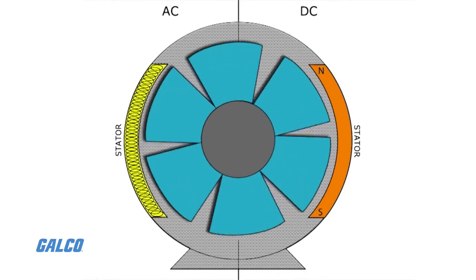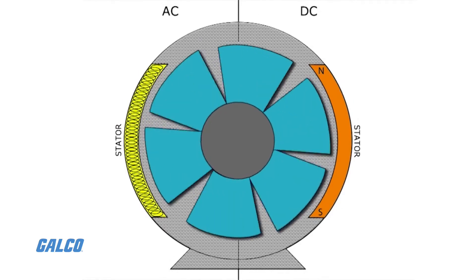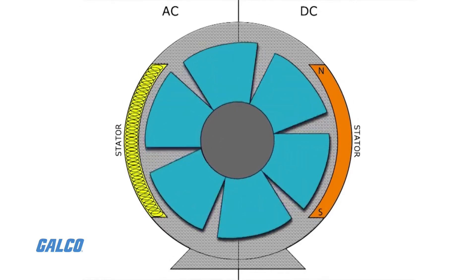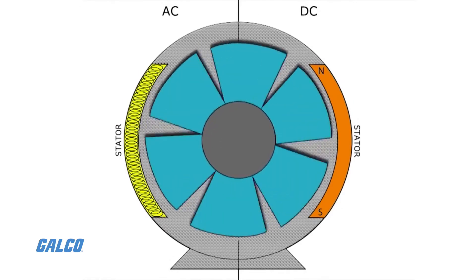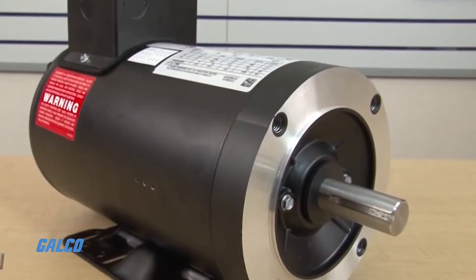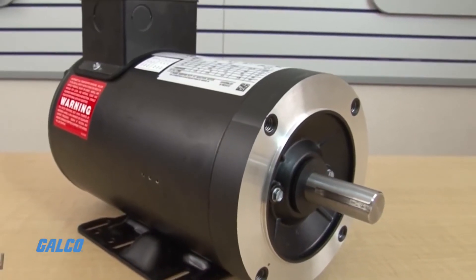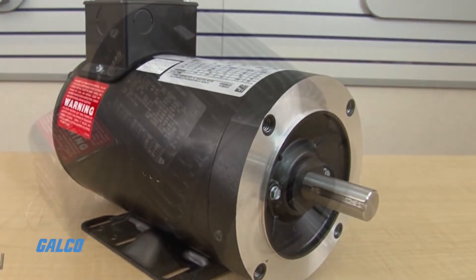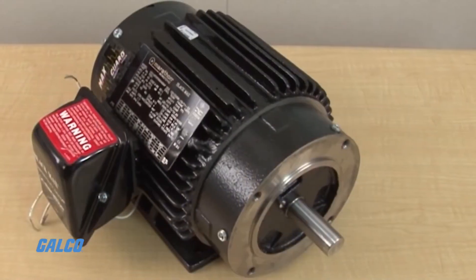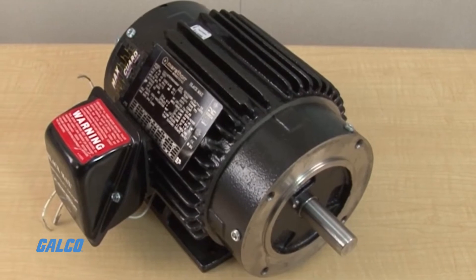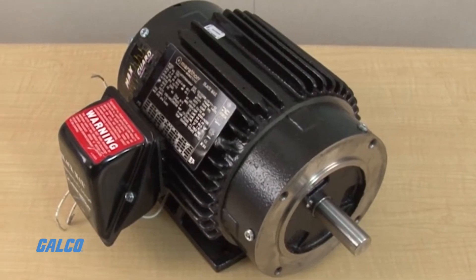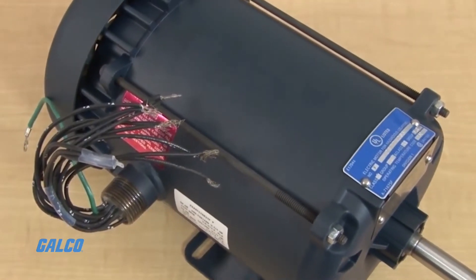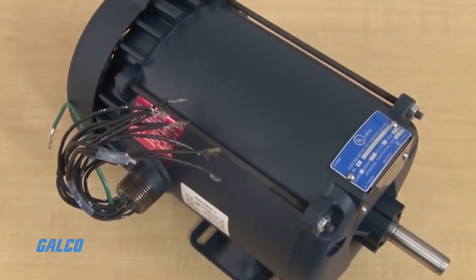The interaction between these rotating fields induces the rotation of the motor. AC motors are less efficient than DC motors because they have to create their own magnetic field, but they offer greater control.